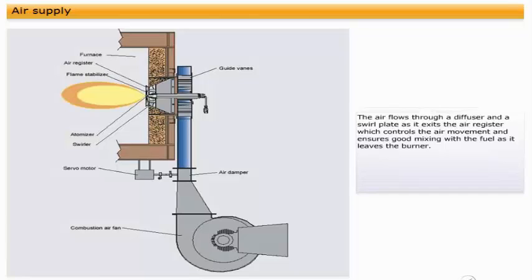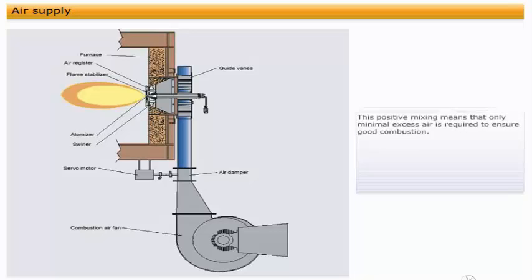The air flows through a diffuser and a swirl plate as it exits the air register, which controls the air movement and ensures good mixing with the fuel as it leaves the burner. This positive mixing means that only minimal excess air is required to ensure good combustion.